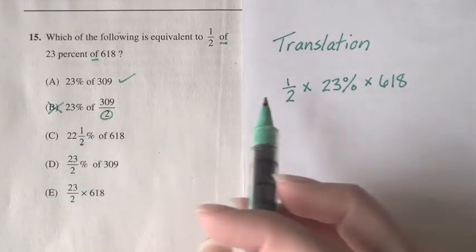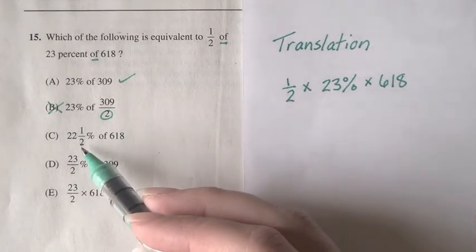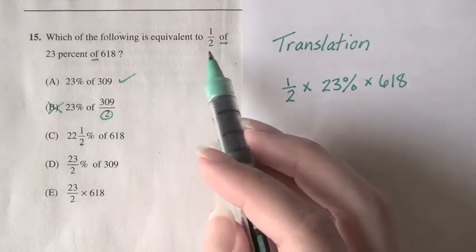For C, we've taken one-half times 23 and turned it into subtraction. That's not what 'of' means—'of' means multiplication.